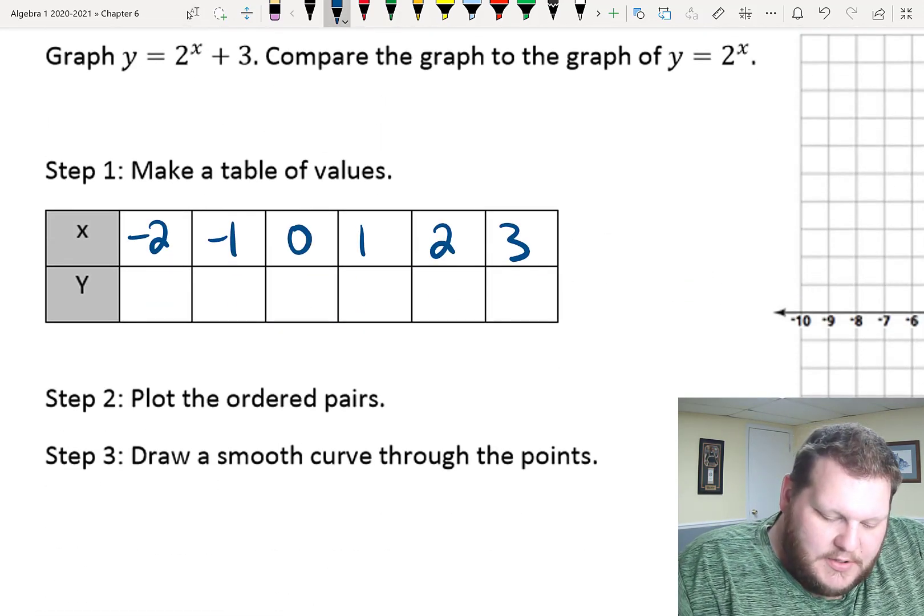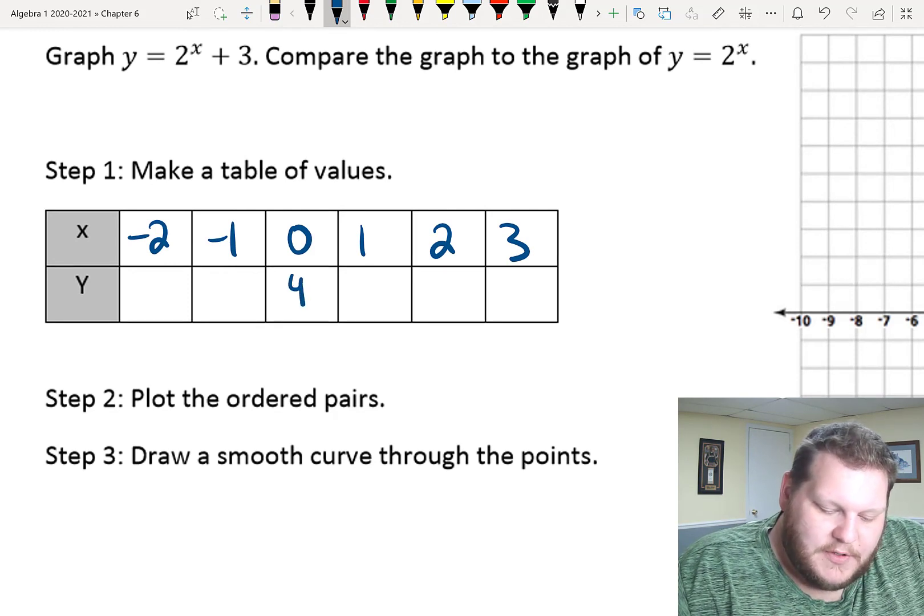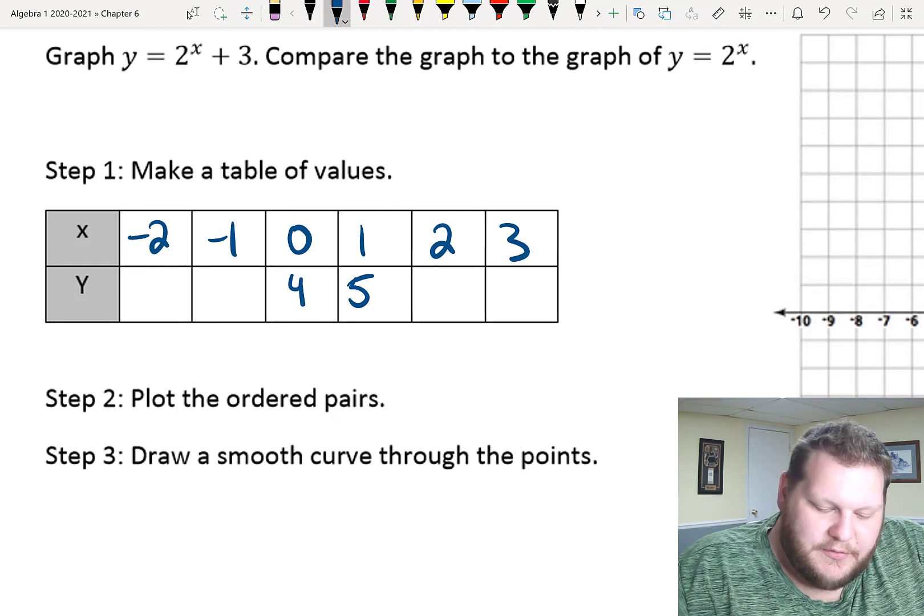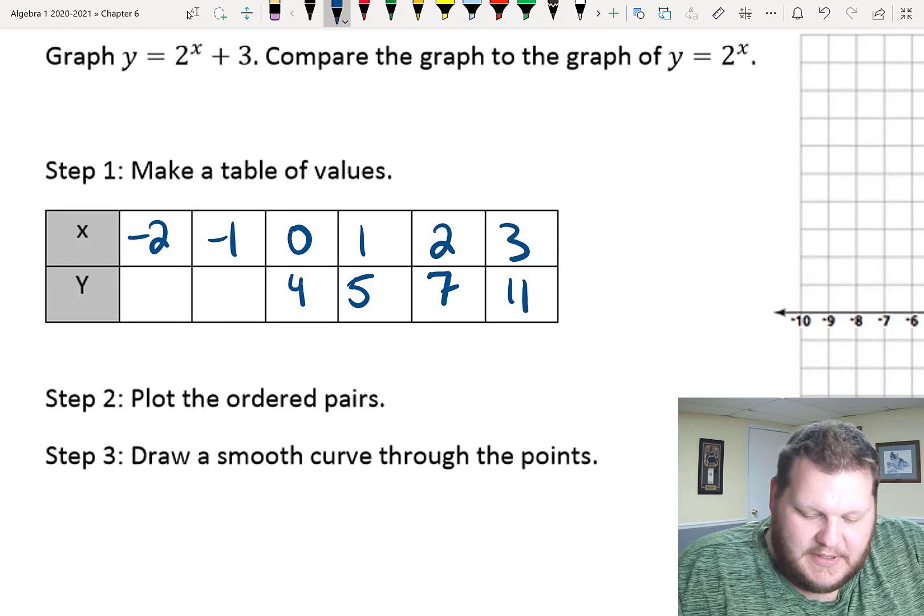So, this should be 2 to the 0 power is 1, plus 3 is 4, 2 to the first power is 2, plus 3 is 5, 2 squared is 4, plus 3 is 7, 2 cubed is 8, plus 3 is 11.